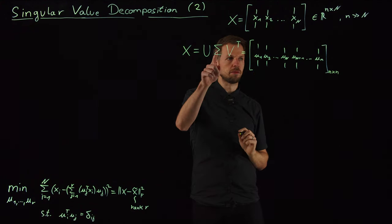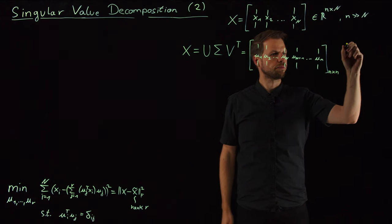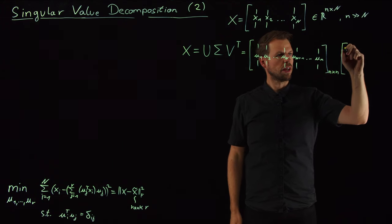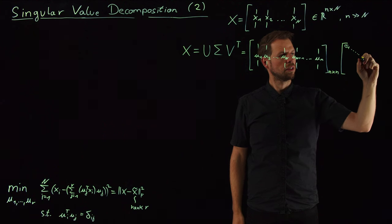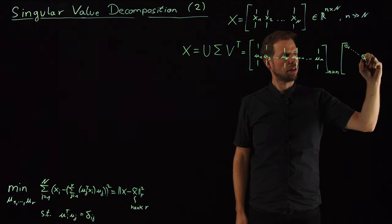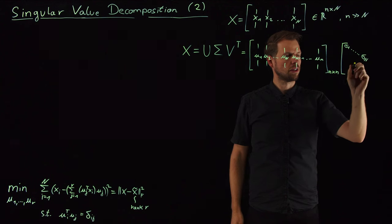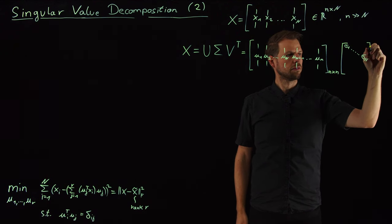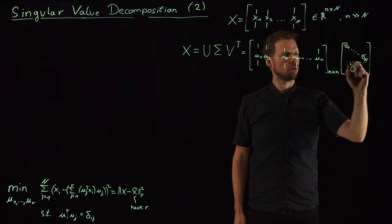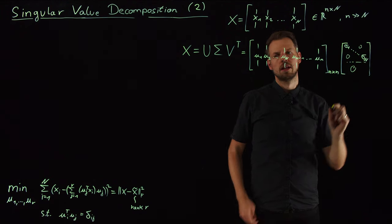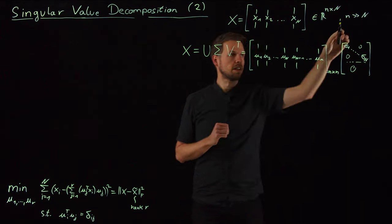Then we have the sigma matrix, which is actually very simple. We have on the diagonal, we have n singular vectors, and everything else here is zero. So, we have zeros off the diagonal, and since we have the case that lowercase n, so the dimension of our system is larger than N,